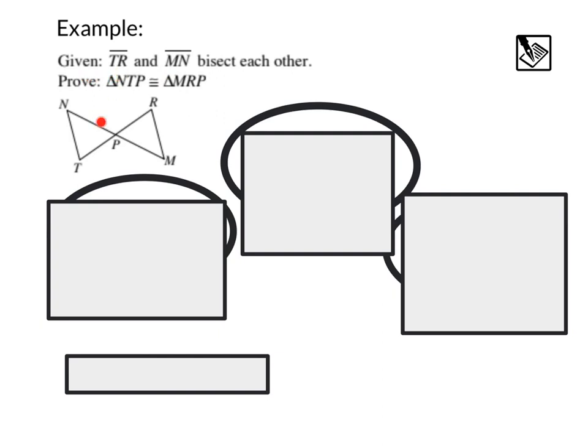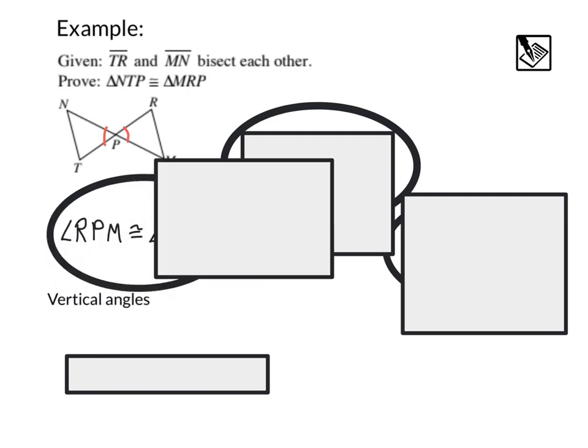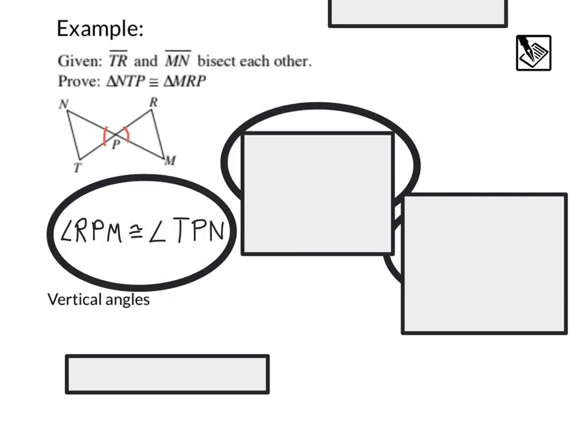Here we are given that TR and MN bisect each other. We want to prove that triangle NTP is congruent to triangle MRP. Well, let's take a look at this figure here, and I actually see that these two angles are vertical. And since those are vertical angles, we can say that those angles are congruent to one another. That is, angle RPM is congruent to angle TPN by reason of vertical angles.